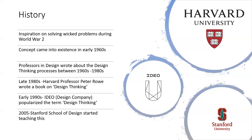In the late 1980s, Harvard professor Peter Rowe wrote a book on design thinking. In the early 1990s is when the actual popularization of design thinking happened, by a company called IDEO. They were the ones who made it possible that even corporates could use design thinking for problem solving. Then from 2005 onwards, Stanford became well known for design thinking courses because of papers written by Stanford university professors. It was also because of Stanford and IDEO that design thinking became very popular, and in 2005 Stanford's school of design started teaching it.